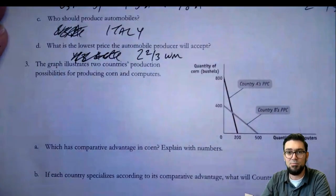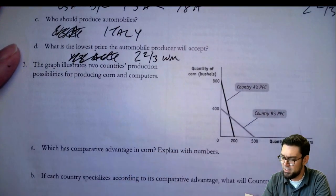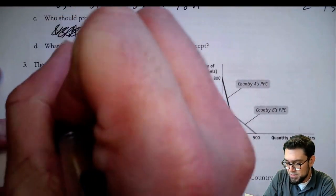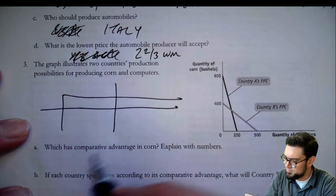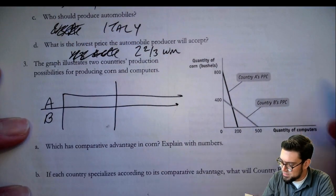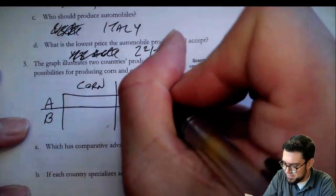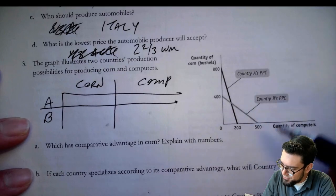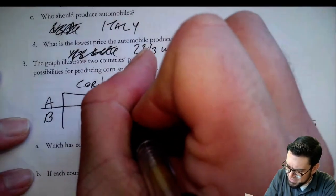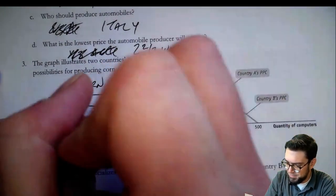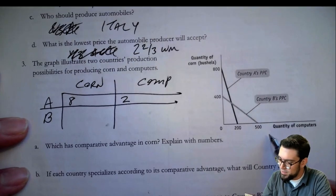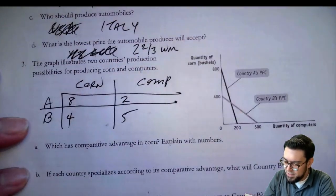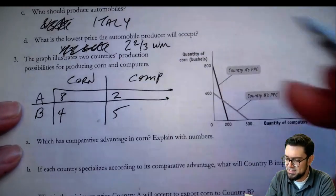Let's take a look at number three: PPC, computers and corn — who has comparative advantage in corn, who should specialize, all that good stuff. Country A can make 200 computers or 80 corn. Country B could make 50 computers or 40 corn. I'm going to drop the zeros to make these easier to work with: A makes 20 and 8, B makes 5 and 4.